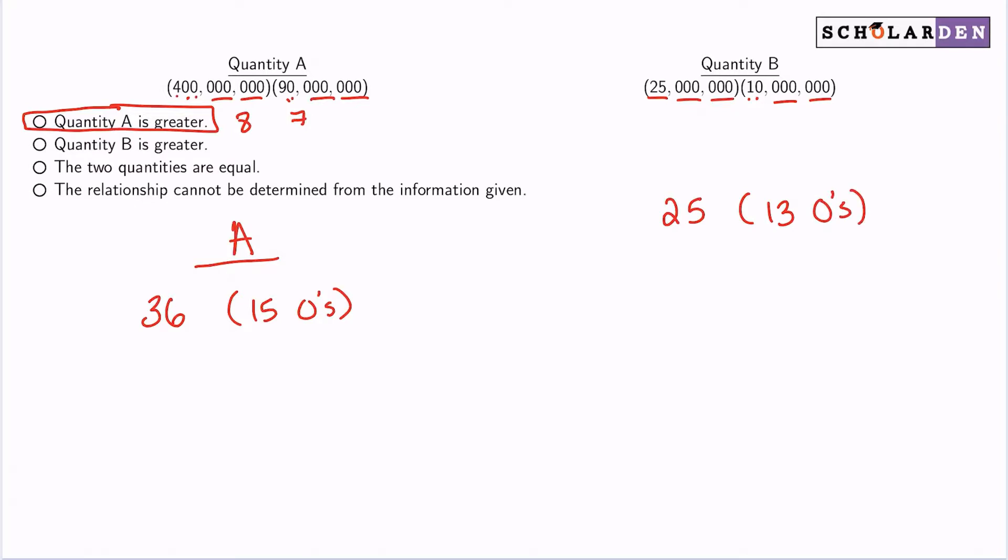Think about it: if we have 13 zeros and 15 zeros, quantity A is going to be larger because you're going to have way more zeros. Your number is going to be way bigger.